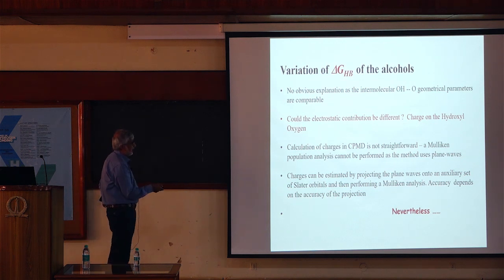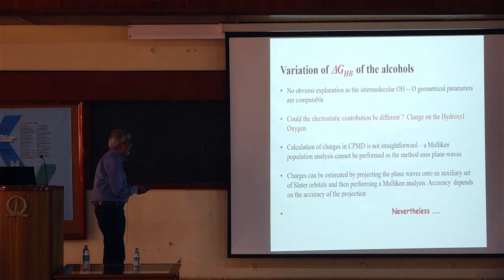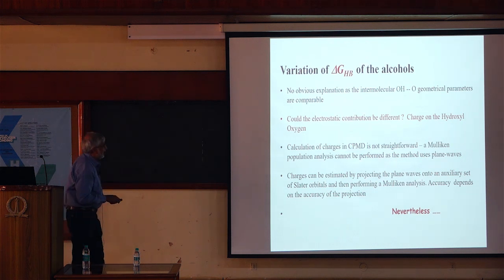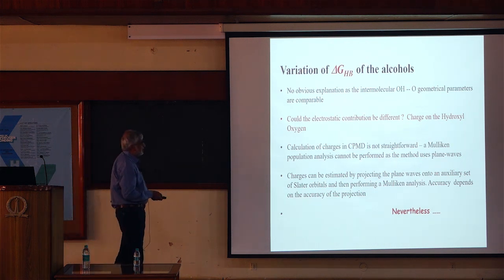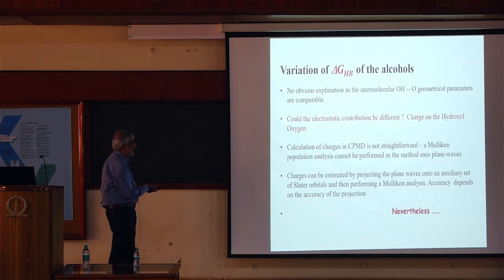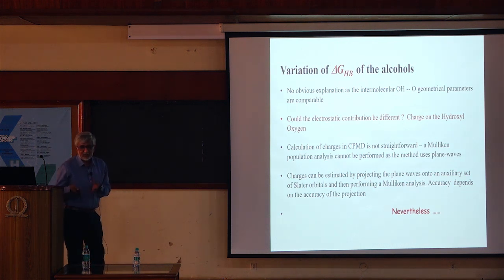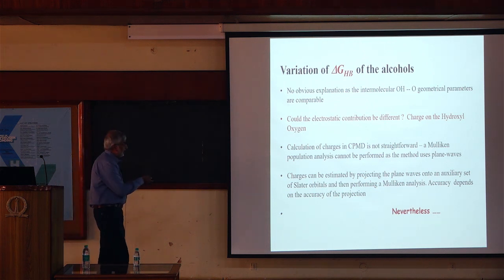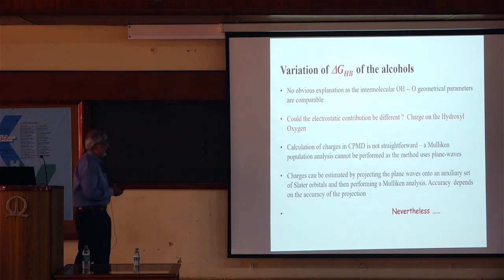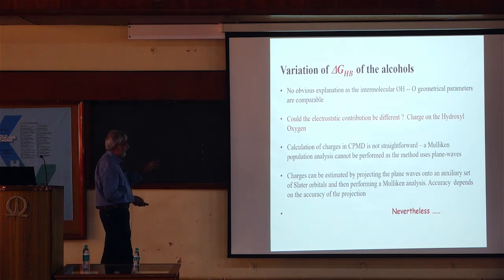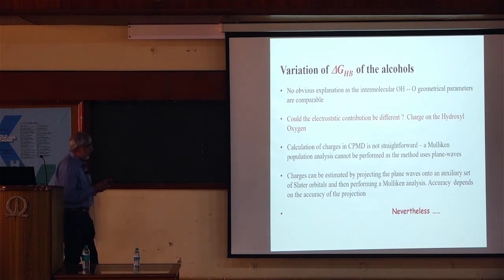One possibility, widely discussed in the literature, is that the electrostatic contribution could be different because of the charge on the hydroxyl oxygen. The way we obtain charges in our calculations is a little difficult, because in our ab initio molecular dynamics we express the electronic part in terms of plane waves, which are diffuse, making straightforward Mulliken population analysis and fixed charges not directly possible.